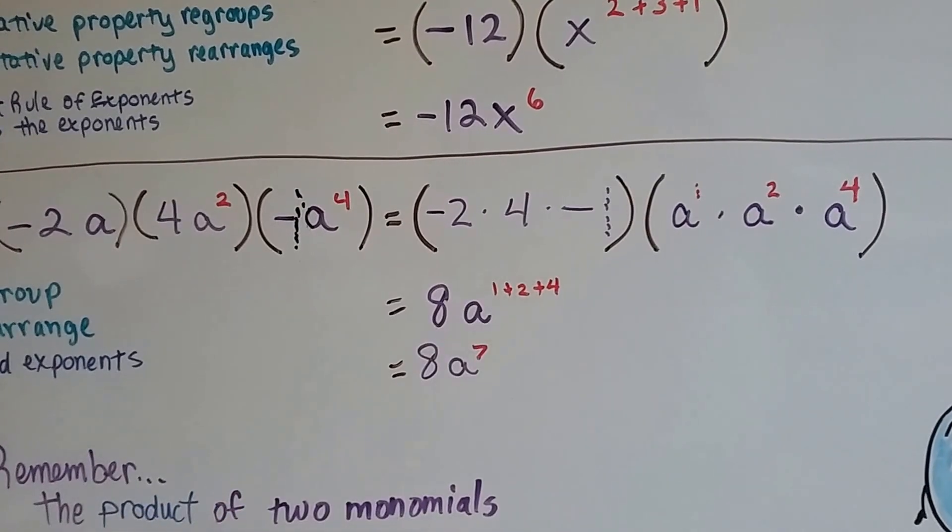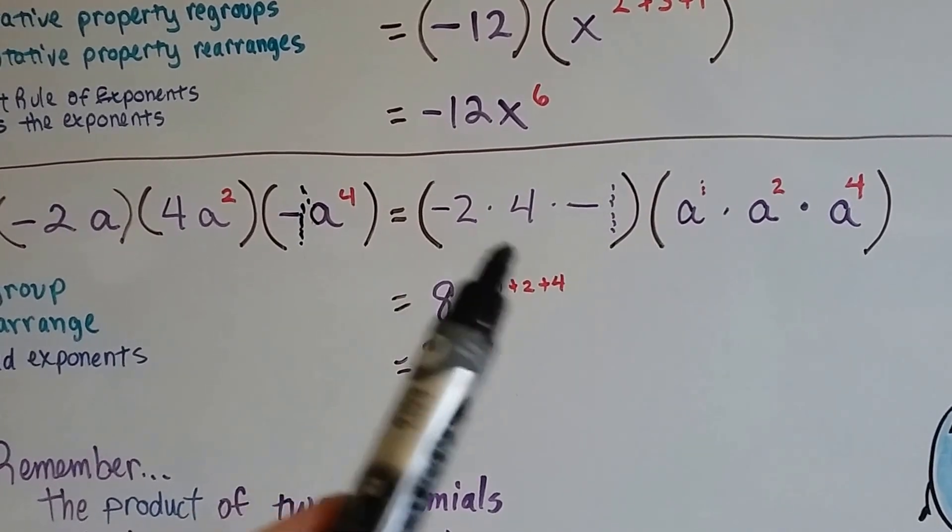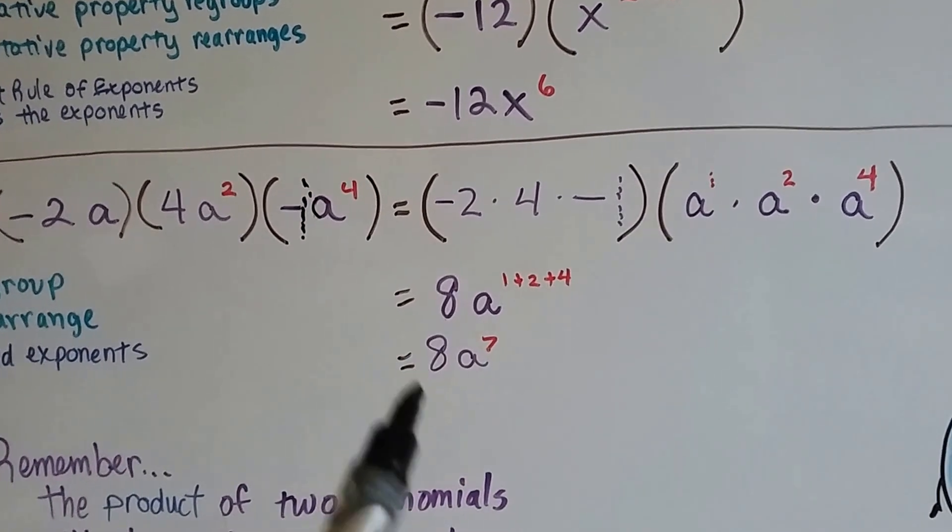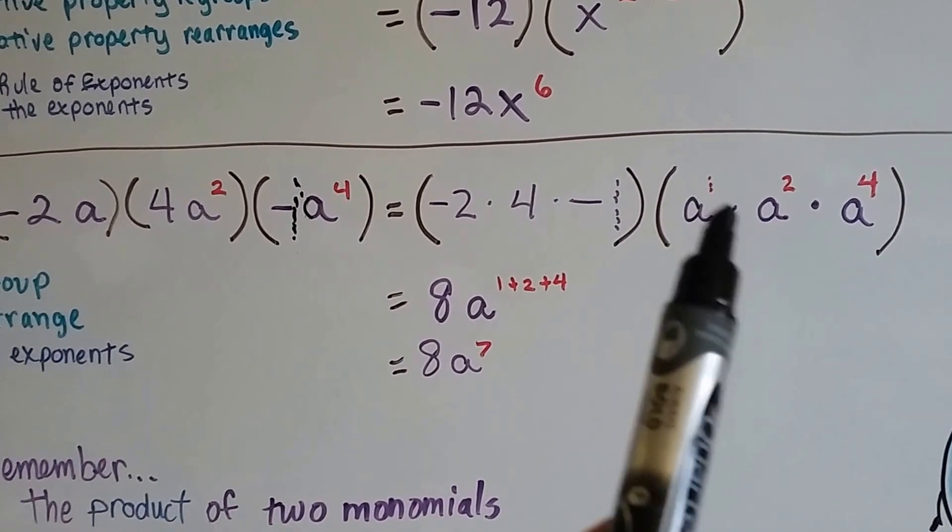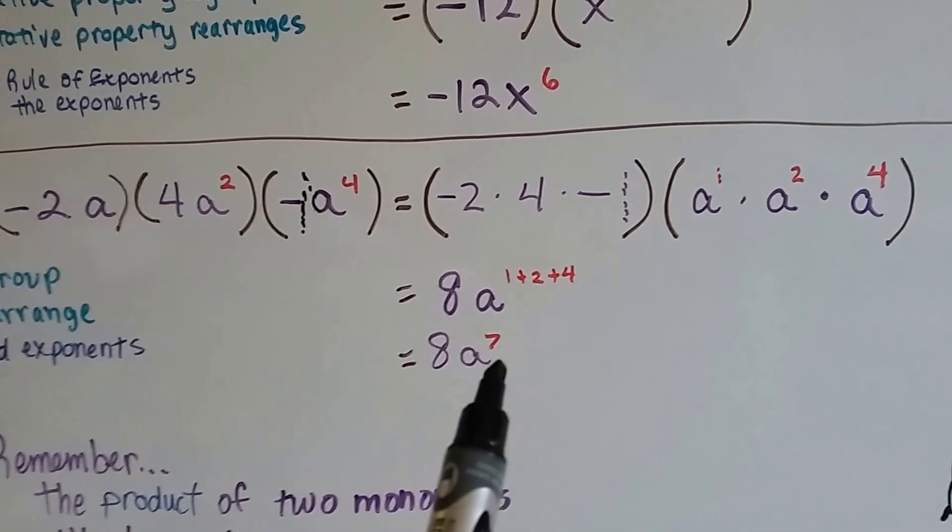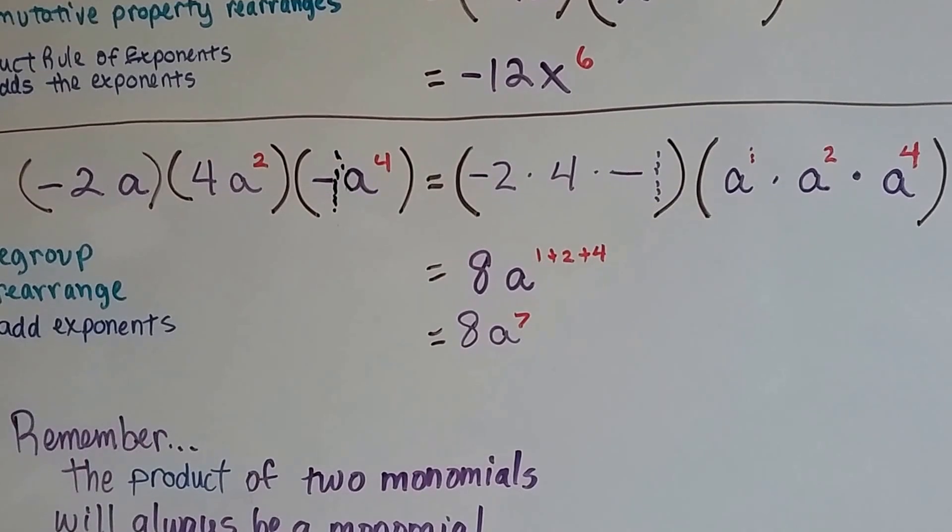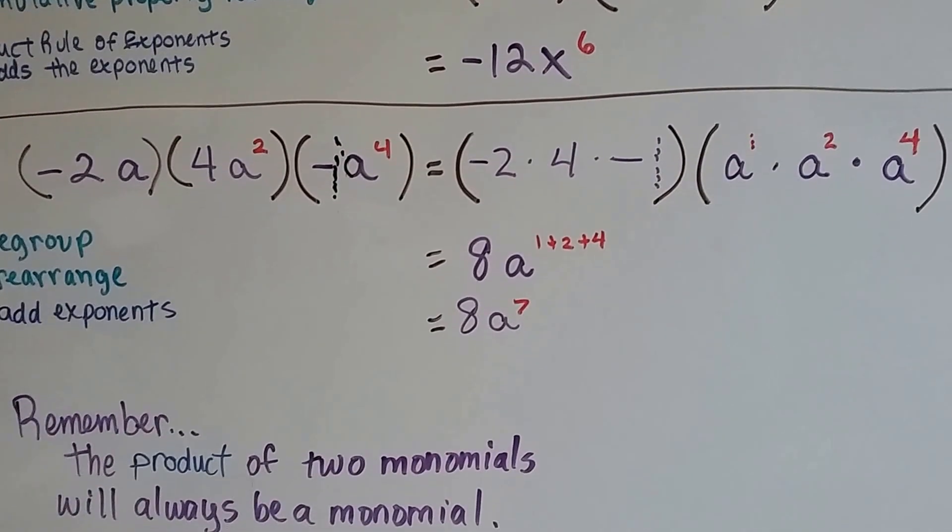Now we've got negative 2 times 4. Well, that's negative 8. Negative 8 times a negative 1. Two negatives make a positive. So, now we have a positive 8. Then, we have a to the 1 plus 2 plus 4. That's a to the seventh. When you do it methodically, bit by bit, it's really not that hard.